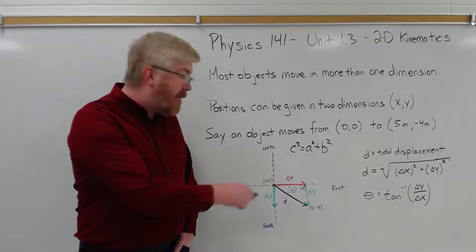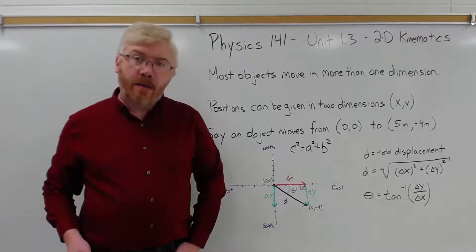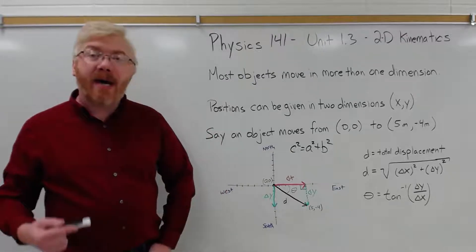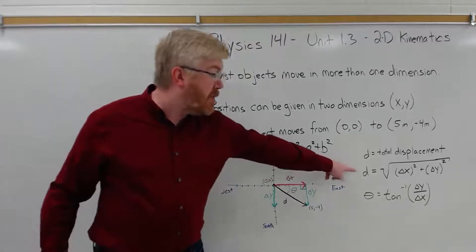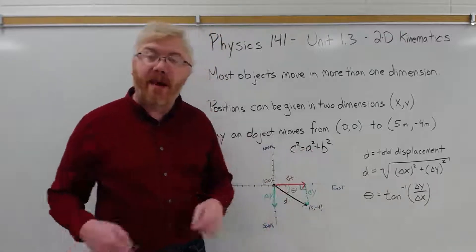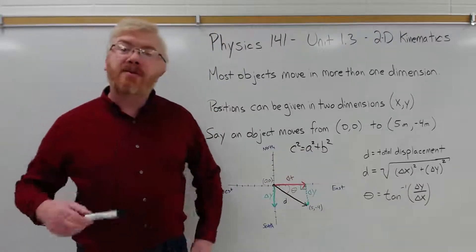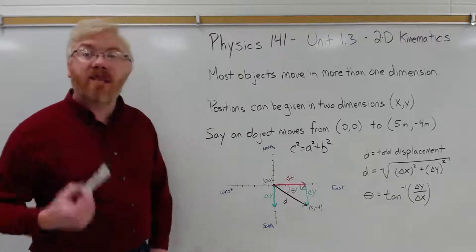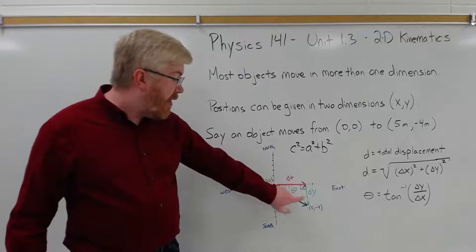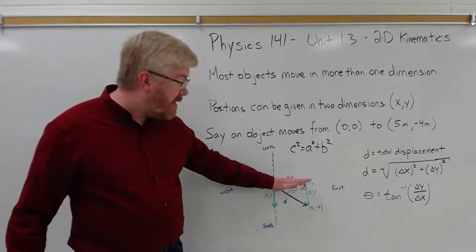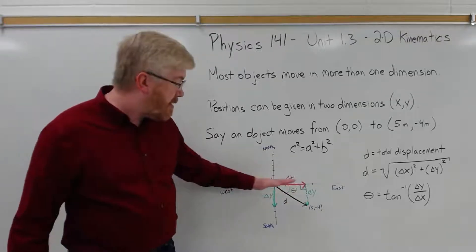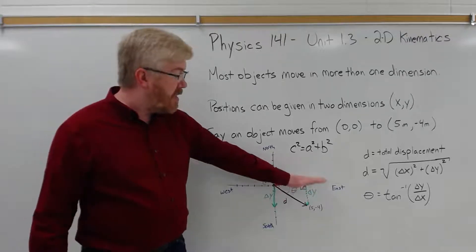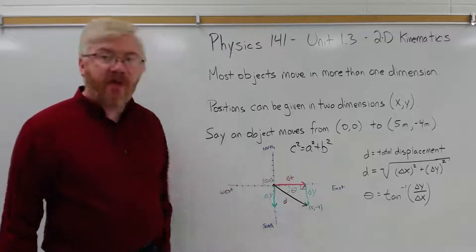But remember, this is a displacement. So it is a vector. It has both magnitude and direction. So I can get the magnitude of that displacement using this equation here from the Pythagorean theorem. But I also need to give you a direction. Because it's a displacement. It's a vector. So I have to figure out what the angle is. How far does it deviate from the positive x-axis? Assuming the positive x-axis is zero degrees. How much does it deviate from the positive x-axis? That's angle theta.